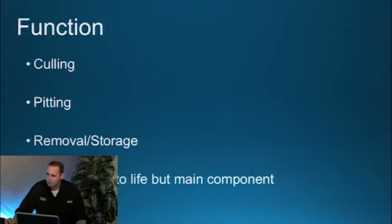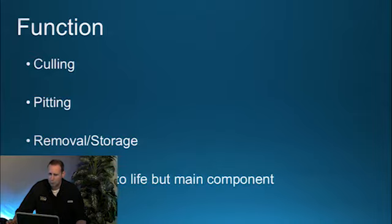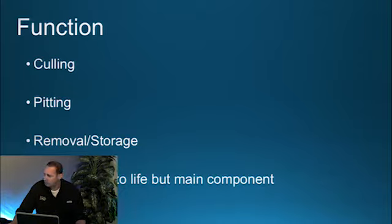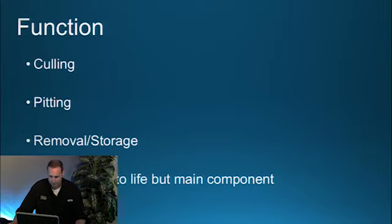Pitting involves blood cells which are abnormal — they either contain something on the surface such as a parasite or a granule, and these red blood cells are cleaned and then returned back into circulation. As part of the reticuloendothelial system, the spleen produces lymphocytes, stores iron and antibodies, so it's very important even though you can have a normal life without a spleen.